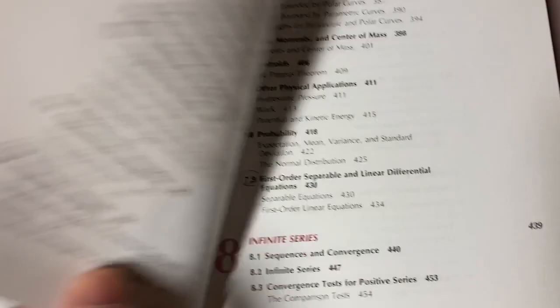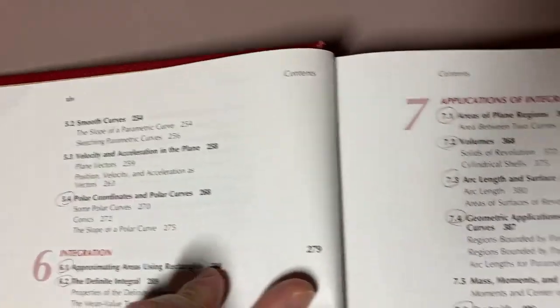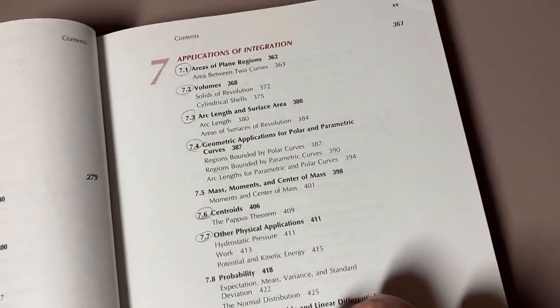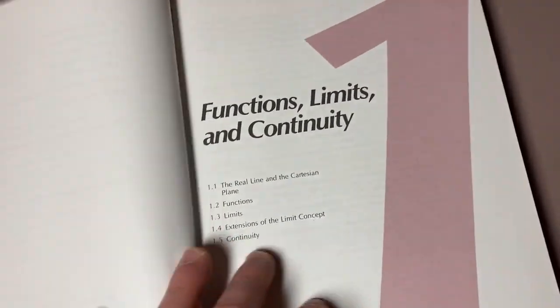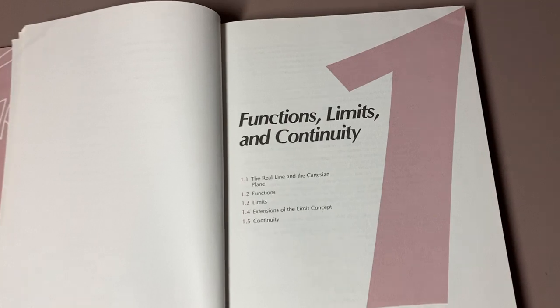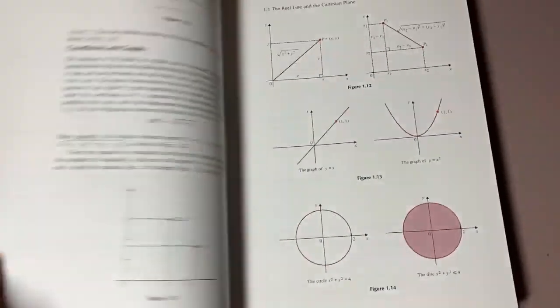Oh, there it is. Parametric curves. Yeah, it does have parametric curves and smooth curves. Okay, I'm trying to think, is anything missing? But it seems like it has all of the content that's typically taught in Calc 1, Calc 2. This book is pretty good.